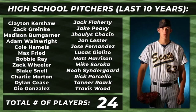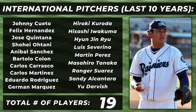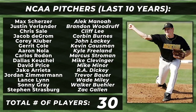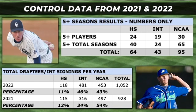I also want to see how this data applied to pitchers over the last 10 years. Pitchers drafted out of high school accrued 24 five-plus WAR seasons — Clayton Kershaw took the number one spot with six five-plus seasons, Zach Greinke finished second with five, and Madison Bumgarner finished third with three. The international pitcher subgroup had 19 players with five-plus WAR seasons; Johnny Cueto led with three, while Felix Hernandez, Jose Quintana, and Shohei Ohtani tied for second with two. NCAA pitchers are the largest group with 30 five-plus WAR pitchers — Max Scherzer led all subgroups with nine five-plus WAR seasons, Justin Verlander took second with five, and Chris Sale and Jacob deGrom tied with four.